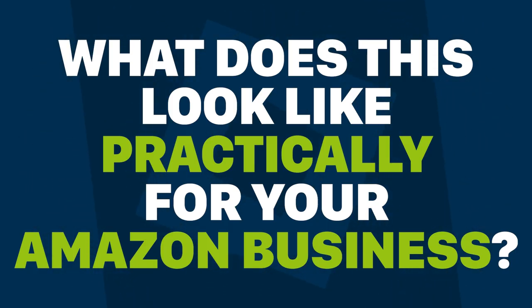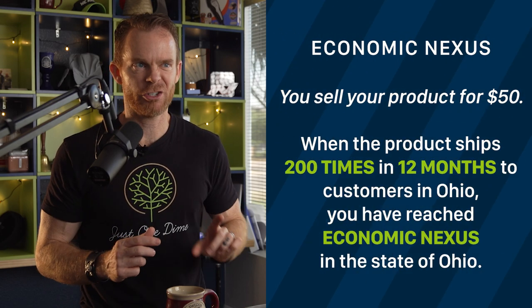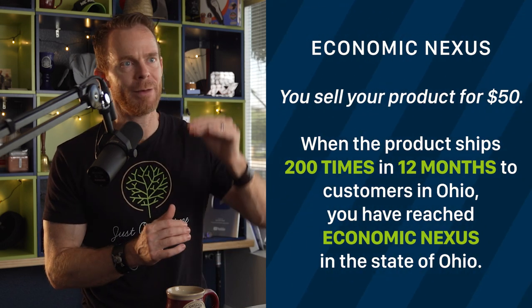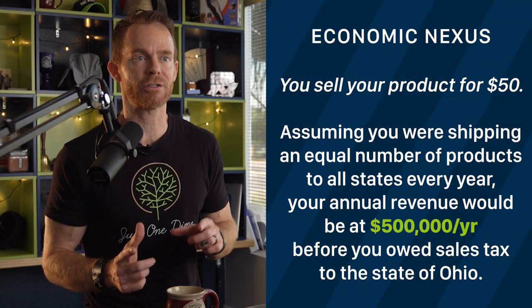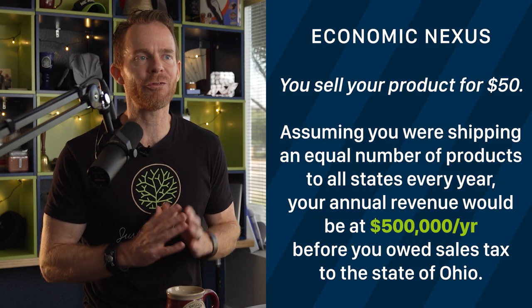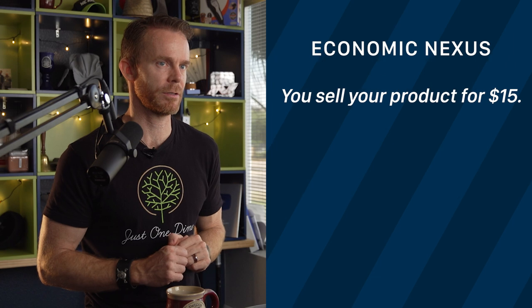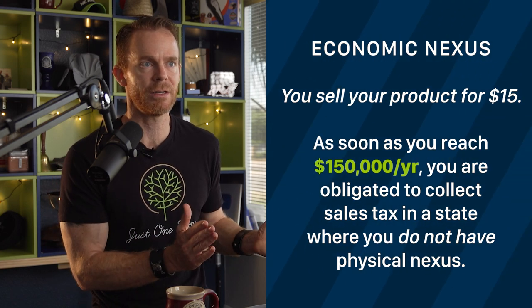So what does this look like in practicality for your Amazon FBA business? Let's say you're selling a product for $50 a piece on Amazon. When that product has shipped 200 times within 12 months to customers in Ohio, you have reached economic nexus for the state of Ohio, which means you have to start collecting and remitting sales tax. Assuming you were shipping an equal number of products to all states every year, your annual revenue would be at $500,000 a year before you owed sales tax to the state of Ohio.